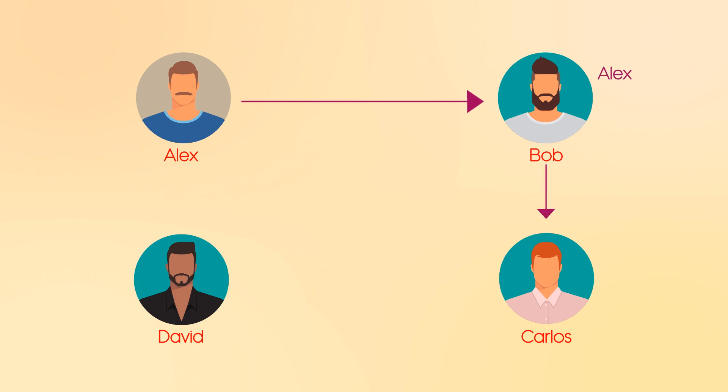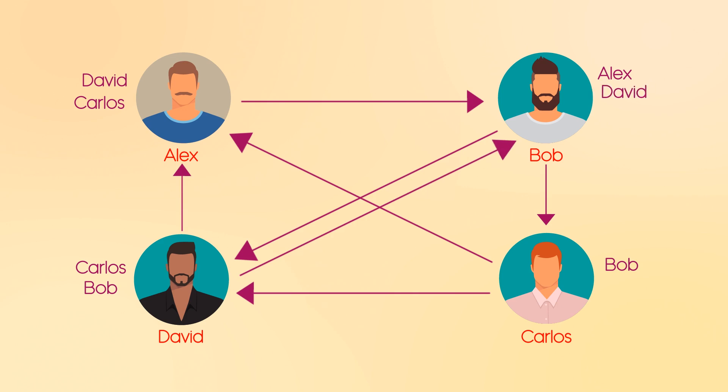Then let's say Bob chooses both Carlos and David as a tie for the best, definitely better than Alex, so those each get one endorsement from Bob. Carlos says that Alex and David are tied for the best, so we'll write those endorsements there. And then David says that Alex and Bob are tied for the best.